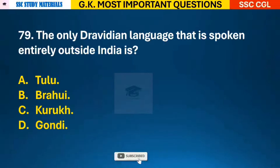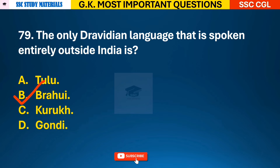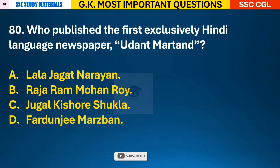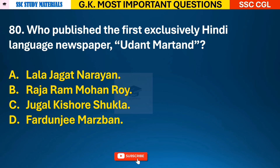Question 79: The only Dravidian language that is spoken entirely outside India is? Answer B - Brahui. Question 80: Who published the first exclusively Hindi language newspaper Udant Martand? Answer C - it was published by Jugal Kishor Shukla.